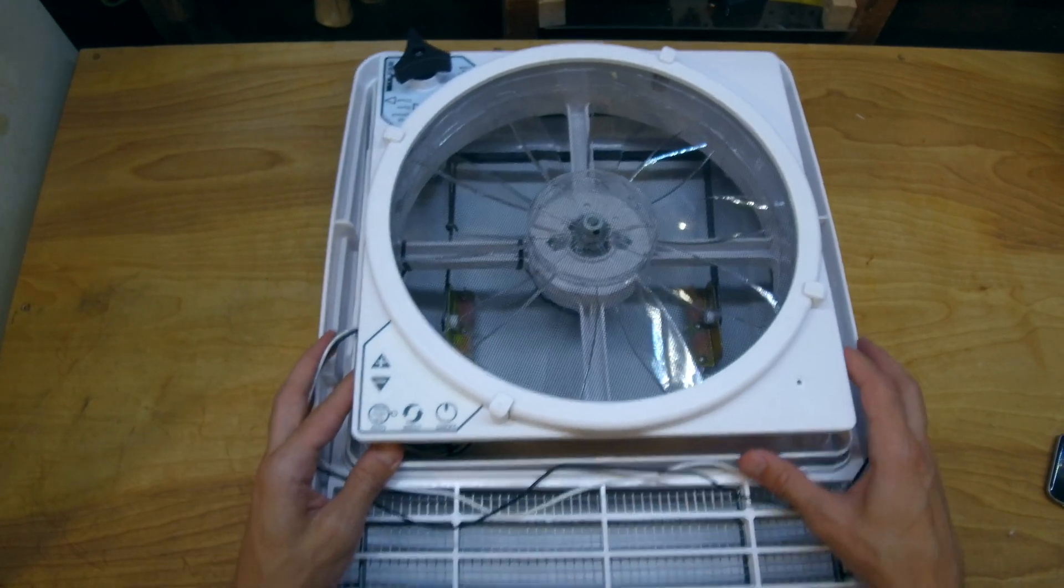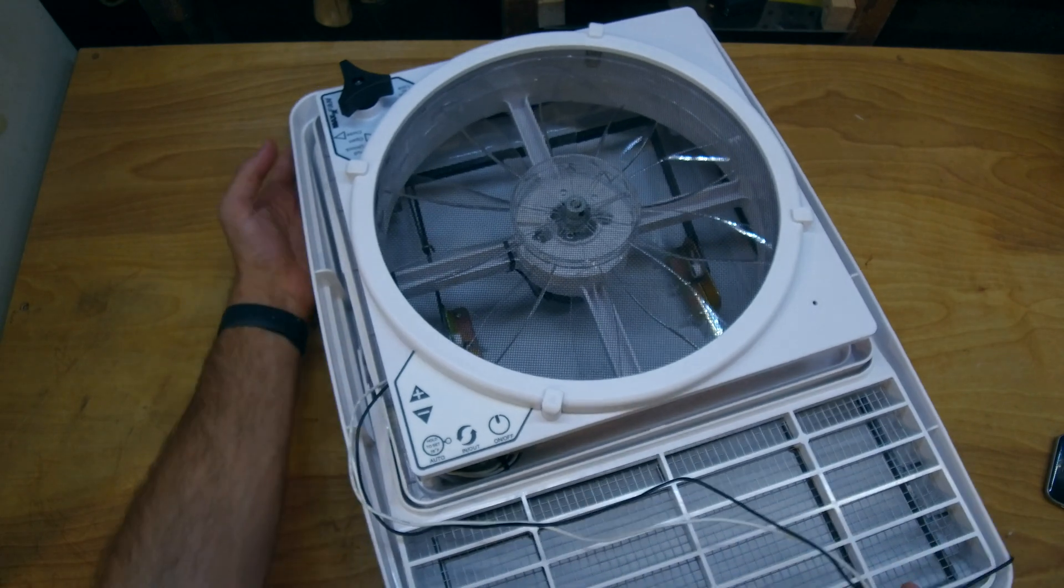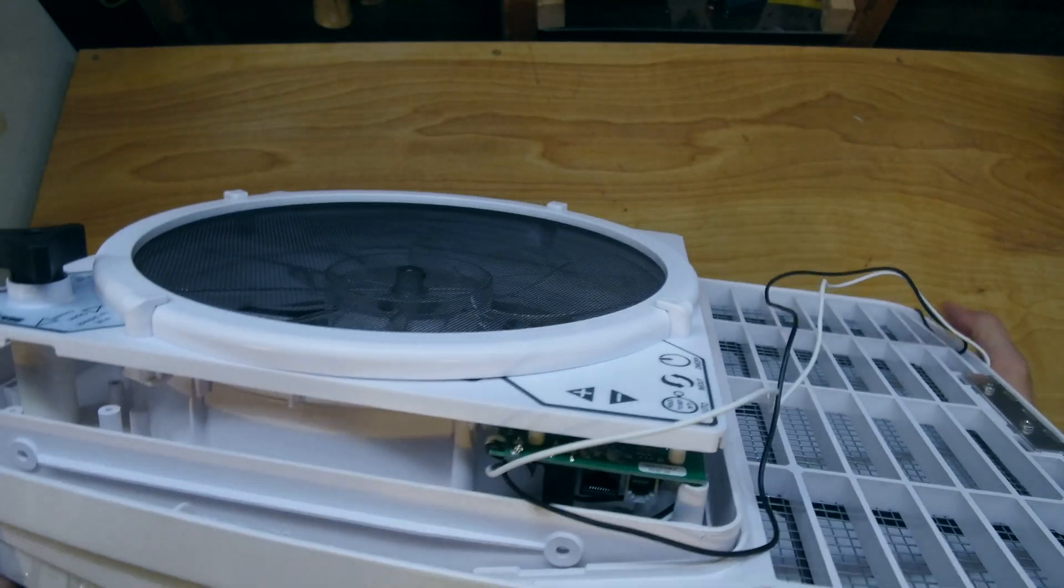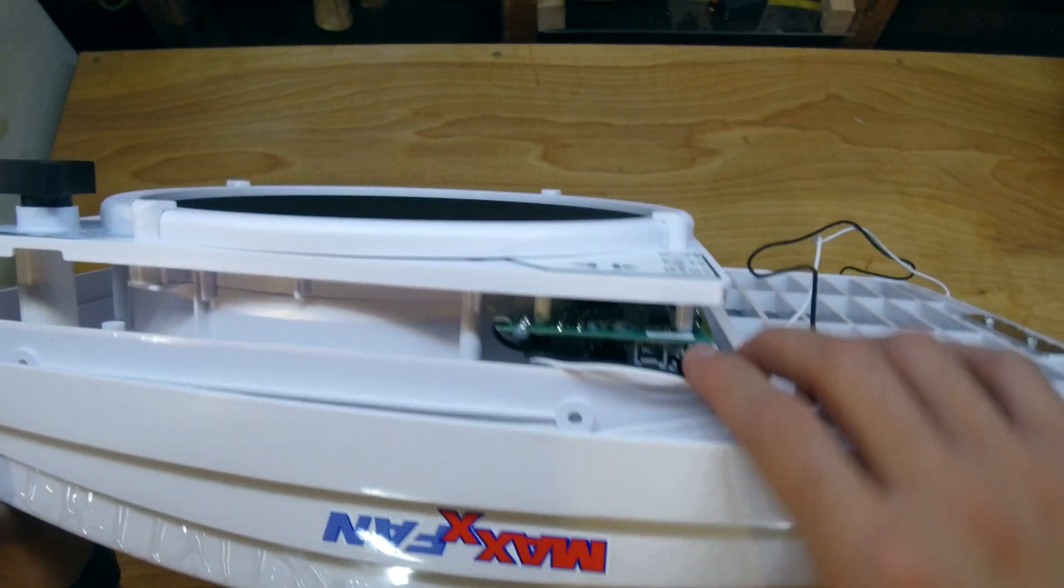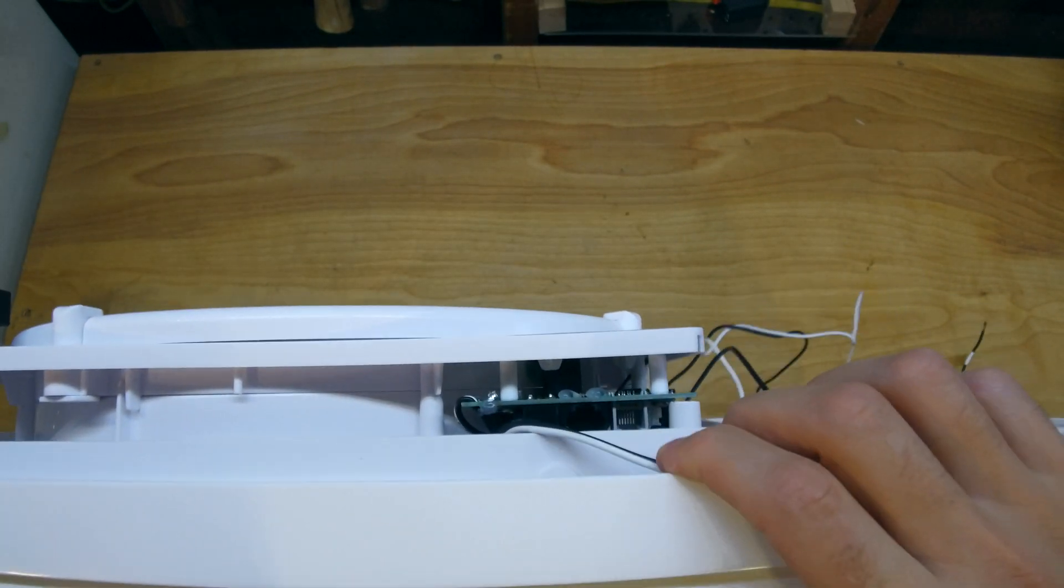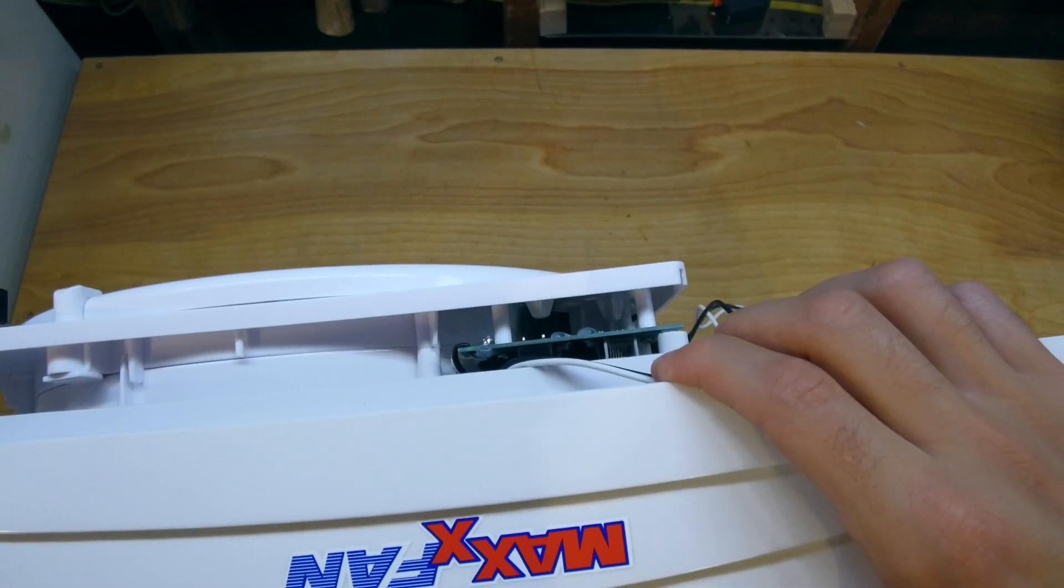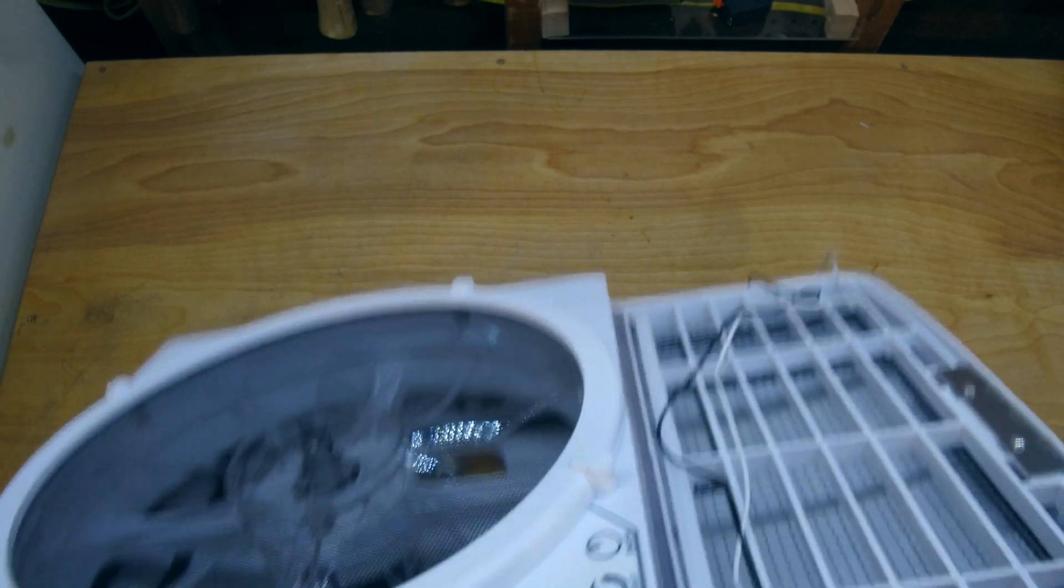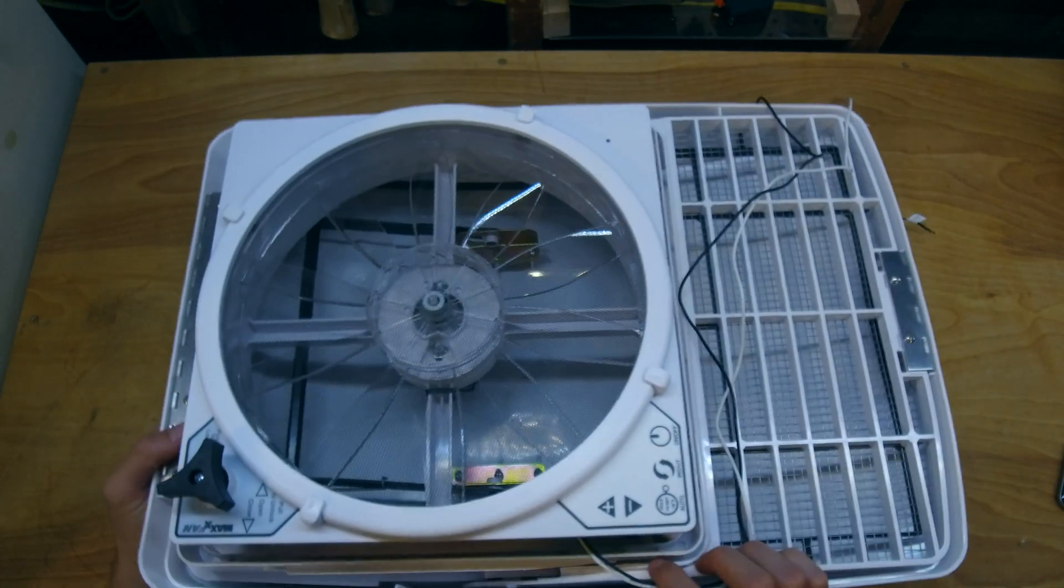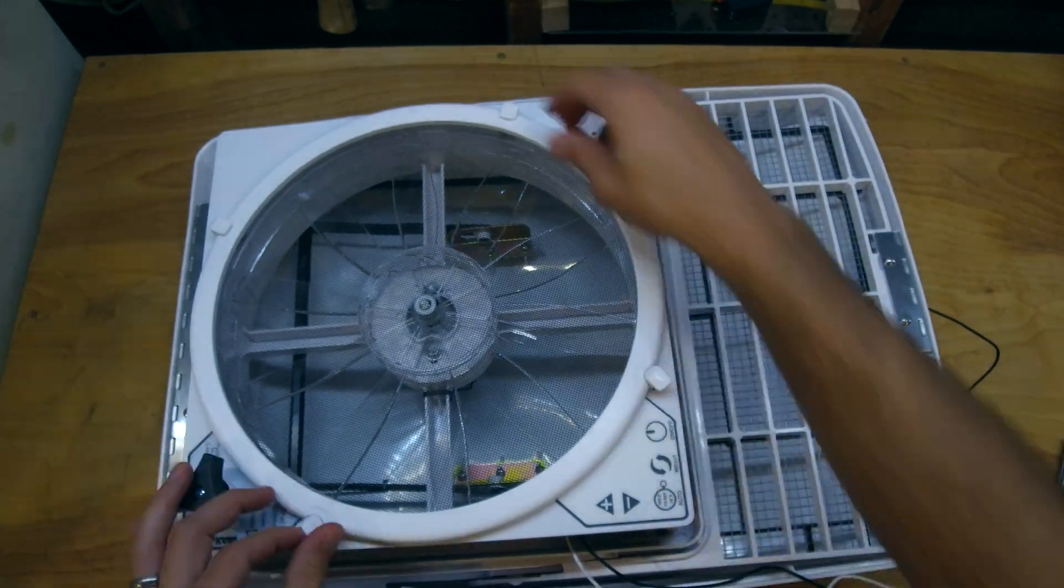When I bought the fan, I noticed that there's an Ethernet port on the circuit board. I discovered that some optional accessories can use this port to add a wired remote control, but I couldn't find any information about how the port works, and I wondered if it could be used to add some smart control or a custom remote control interface to the fan.